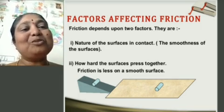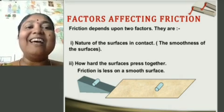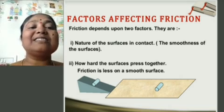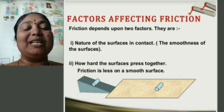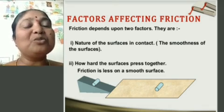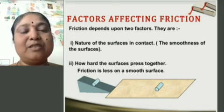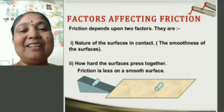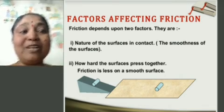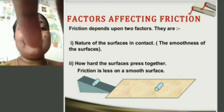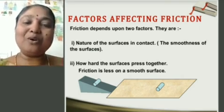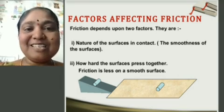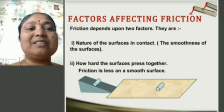Friction depends upon two factors. They are: nature of the surface in contact, and how hard the surface is pressed together. Friction is less on the smooth surface. For example, if soap water is fallen down and you step on it, you can skid. That's why we say friction is very less on a smooth surface.